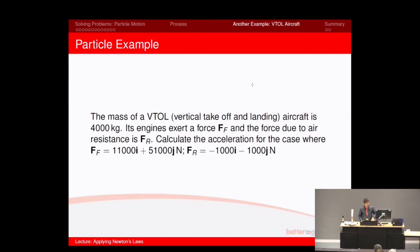Another example: a vertical takeoff and landing aircraft weighs 400 kilograms — its mass is 4,000 kilograms. Its engines exert a force Ff, and the force due to air resistance is fr. We give you the value of both vectors, and now we want you to calculate the acceleration of this aircraft. It is currently in the air, so there is no normal force. Draw your free body diagram, break all the forces into their components, add them into their respective equations, and solve for A. Your answer should have both an i and a j component for the acceleration.